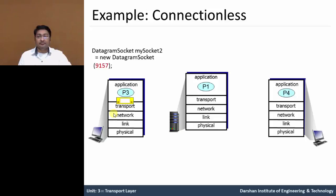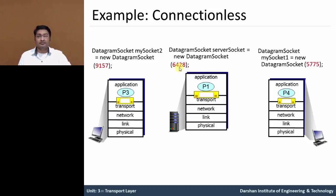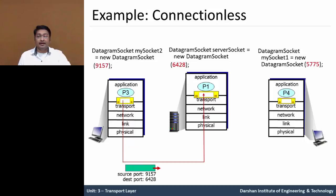The transport layer in host A creates a segment with source port number 9157 and wants to send data to the process with UDP port 6428. There is another host having port number 5775. The transport layer in host A creates a segment containing source port, destination port, and the data, and then passes it to the network layer in host A. The transport layer in host B examines the destination port number and delivers the segment to the socket identified by port 6428.